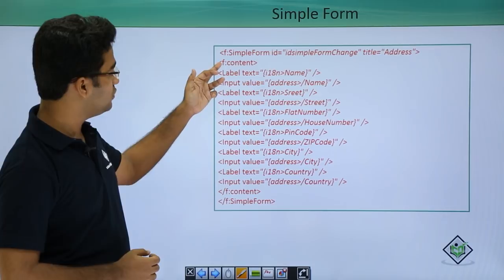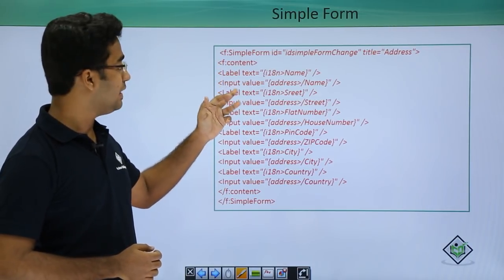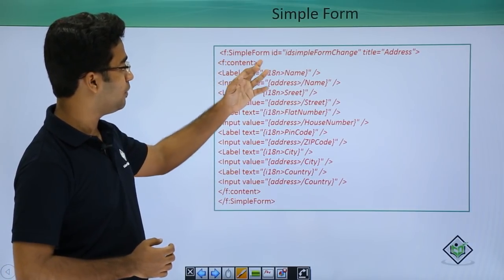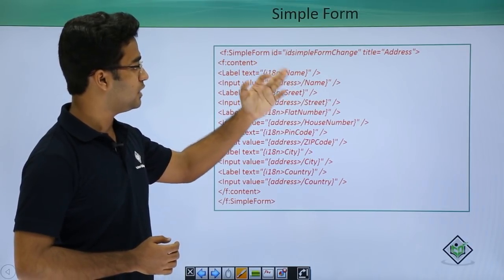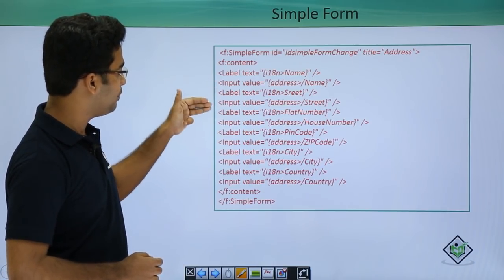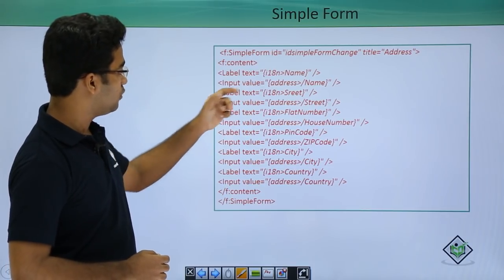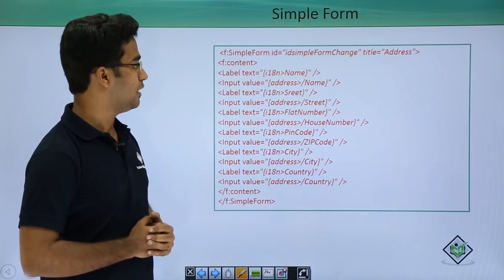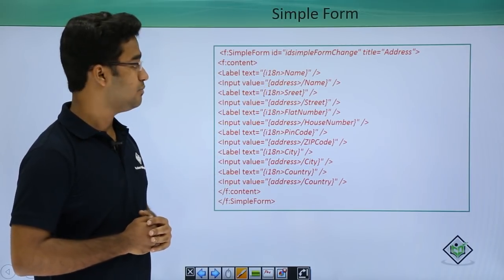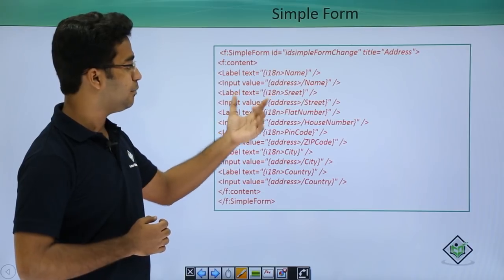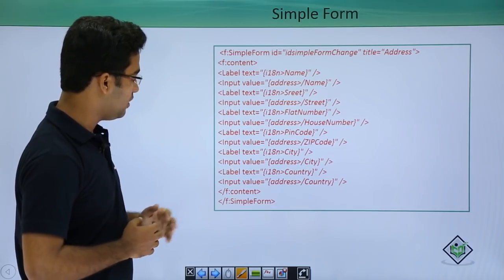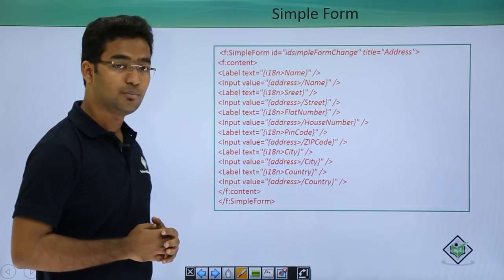This is the coding for simple form. I have used the namespace as 'f', which is basically sap.ui.layout.form.SimpleForm. I have provided the properties: id as 'idSimpleFormChange', title as 'address', and within this I have provided the content — pairs of label and input. The label text comes from the i18n model and the input is bound through the JSON model, where 'address' is the model name and 'name' is the property. Afterwards I closed the content and the simple form.